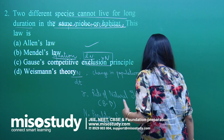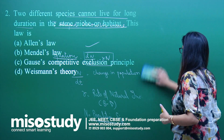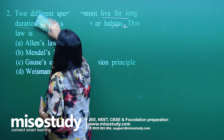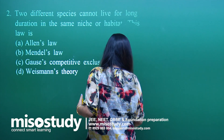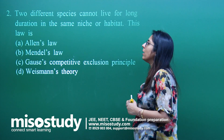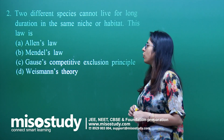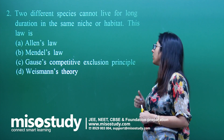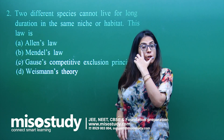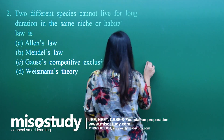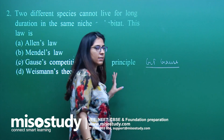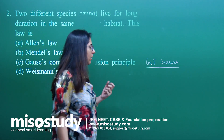Let us talk about question number 2: Two different species cannot live for a long duration in the same niche or habitat. This law is — A) Allen's law, B) Mendel's law, C) Gause's competitive exclusion principle. I will go for option C — Gause's competitive exclusion principle. This was given by G.F. Gause.